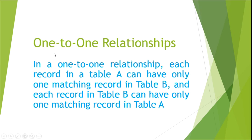First of all, I am going to discuss the one to one relationship. In a one to one relationship, each record in table A can have only one matching record in table B, and each record in table B can have only one matching record in table A. Which means if we have two tables A and B, table A has one record matching with only one record of table B, and table B has one record matching with table A.